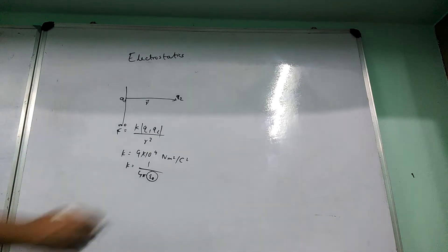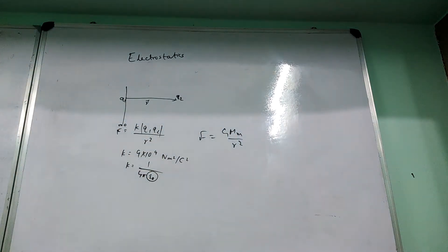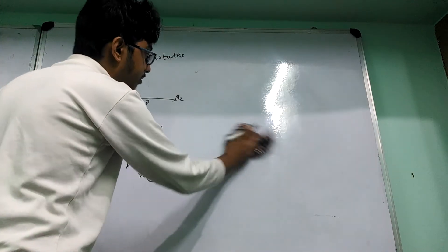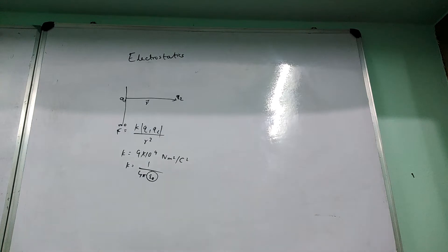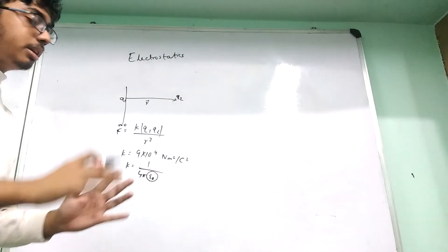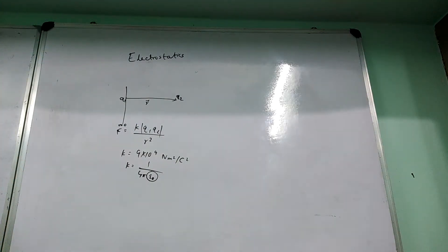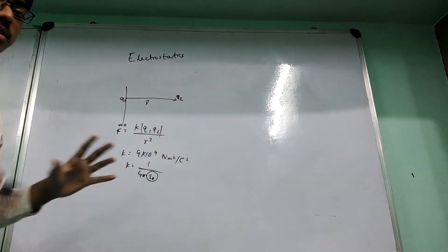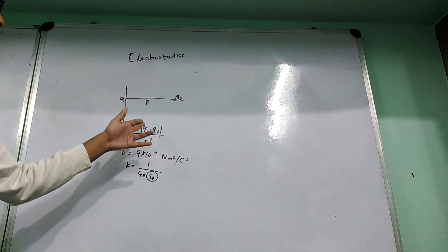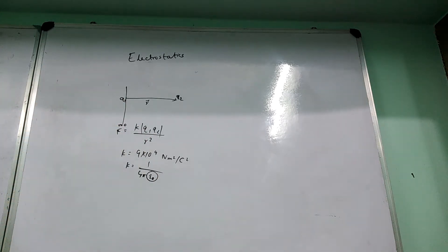Coulomb's law is similar in form to the gravitational law F = GM₁M₂/R². Both are inverse square laws. But fundamentally, gravity and electrostatic force are not similar — they are different forces. Scientists including Einstein have attempted to unify gravitation and electrostatics in the framework of general relativity, but these attempts have mostly failed. At the classical level, both laws look similar with masses replaced by charges, but the quantities themselves are different.